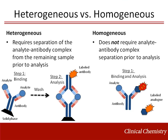Heterogeneous immunoassays require separation of the analyte-antibody complex from the remaining sample prior to final analysis. This can be accomplished using precipitating chemicals, cross-linking with other antibodies, or use of an antibody bound to a solid phase. Once the remaining matrix components are washed away, the remaining assay components are added for final detection.